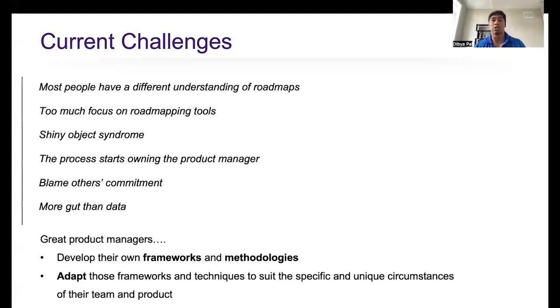Pursuing every idea that seems good without validating or even prioritizing them is what we call the shiny object syndrome. And that's a big problem that we as product managers face when we go to meetings with our stakeholders and execs. Just like the roadmapping tools, product managers also blame the process. When something goes wrong with the roadmap, the response is that we did everything as per the process. But remember, product managers own the process, not the other way around.